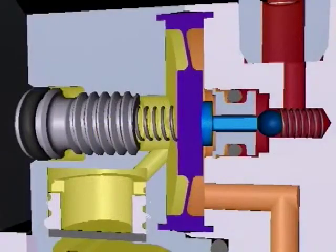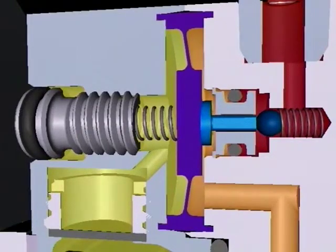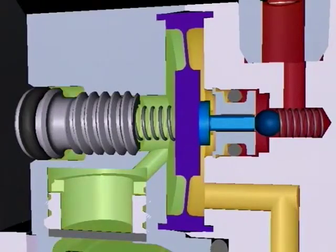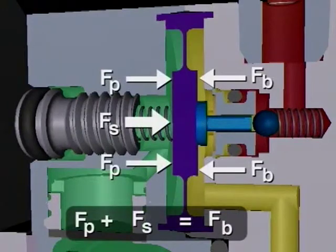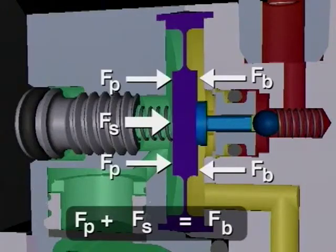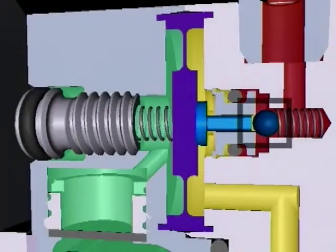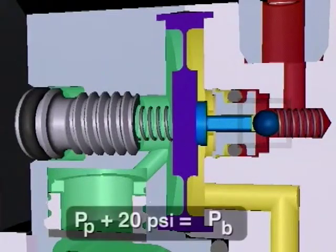With the valve open, the barrier gas pressure increases on the right side, shown by the color change to orange, so the diaphragm moves to the left. When the barrier gas pressure force is equal to the process pressure force plus the spring force, the diaphragm returns to a neutral, undisplaced position. The ball re-seats, closing the gas feed valve. At this point, the barrier gas pressure at the diaphragm and the faces is once again 20 psi greater than the process pressure.